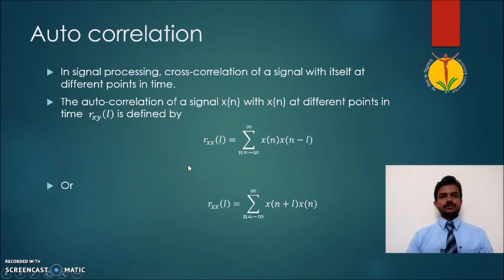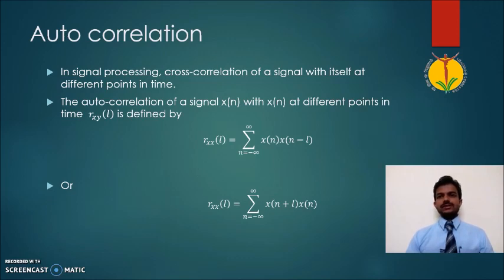Hello and welcome. Today we will see another mathematical process which is called autocorrelation. In the previous video we have seen cross-correlation. Correlation is a mathematical process useful for the comparison between two signals — it gives the similarities between two data sequences.